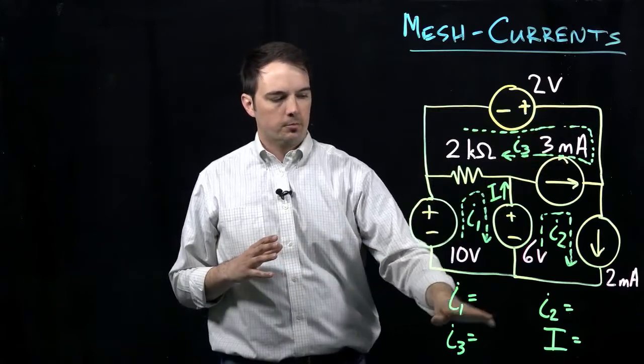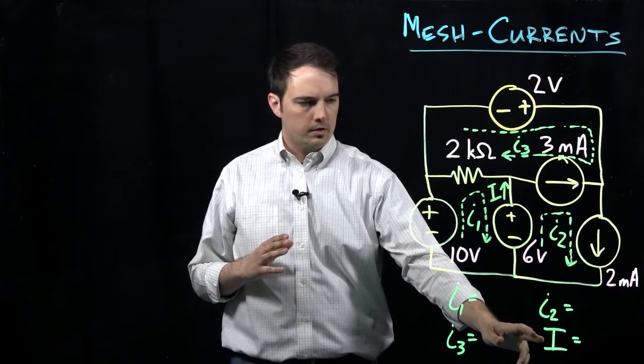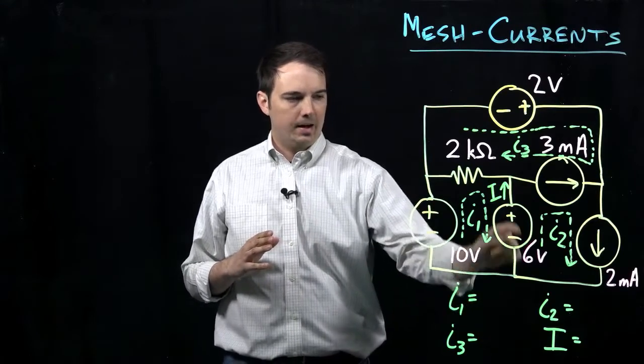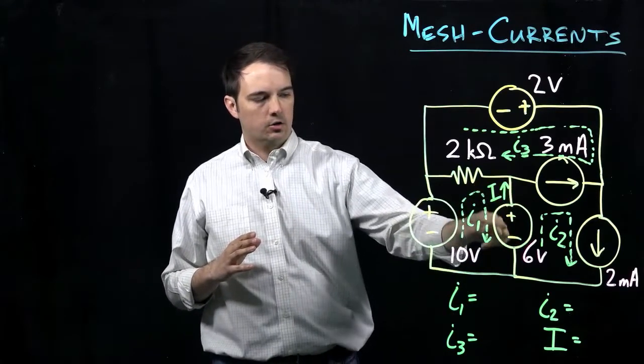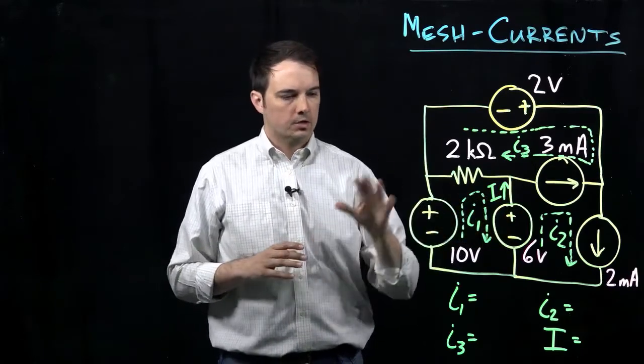We're going to go through the process of solving for each of those mesh currents, and then also solving for the actual branch current I, which is given as the current through this voltage source in the middle path.